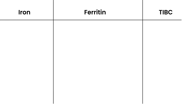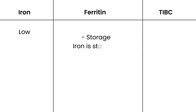Iron is the main element we're talking about, and its deficiency causes anemia. When someone has iron deficiency anemia, obviously the iron levels will be low. Ferritin is the storage form of iron — think of it as where iron is stored in the body. Ferritin is a group of proteins with a core of iron inside, readily available for any body requirement.